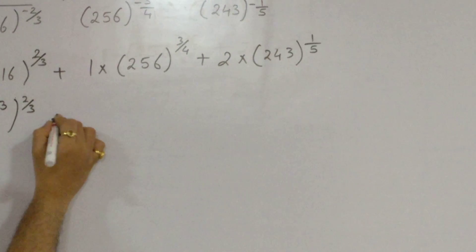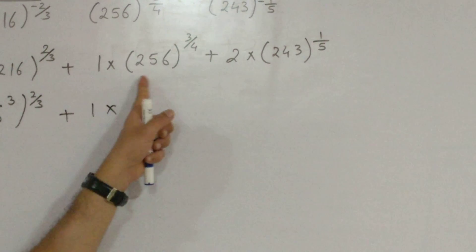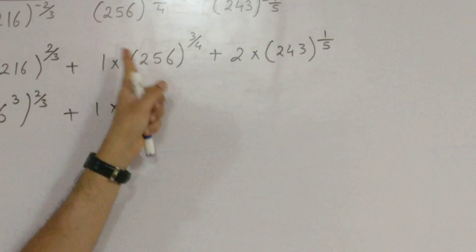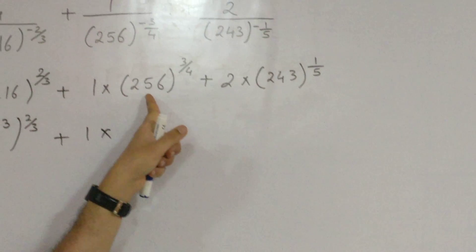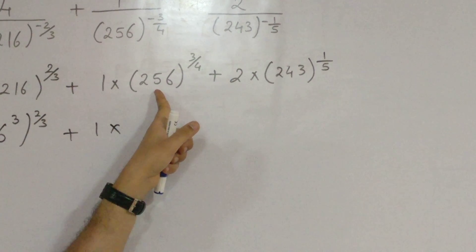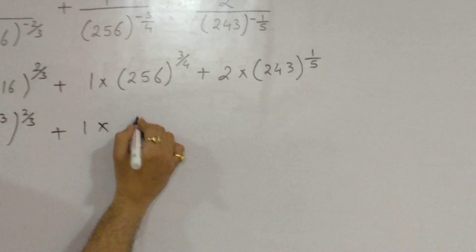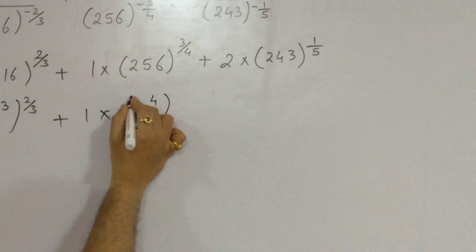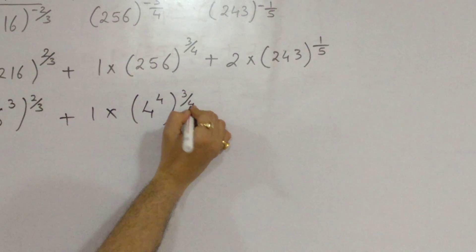Likewise, 1 into 256. I want number from 0 to 9. Whose fourth power will give me number 256. Rightly said so. 4 raised to 4. 4 raised to 4. The whole raised to 3 by 4.